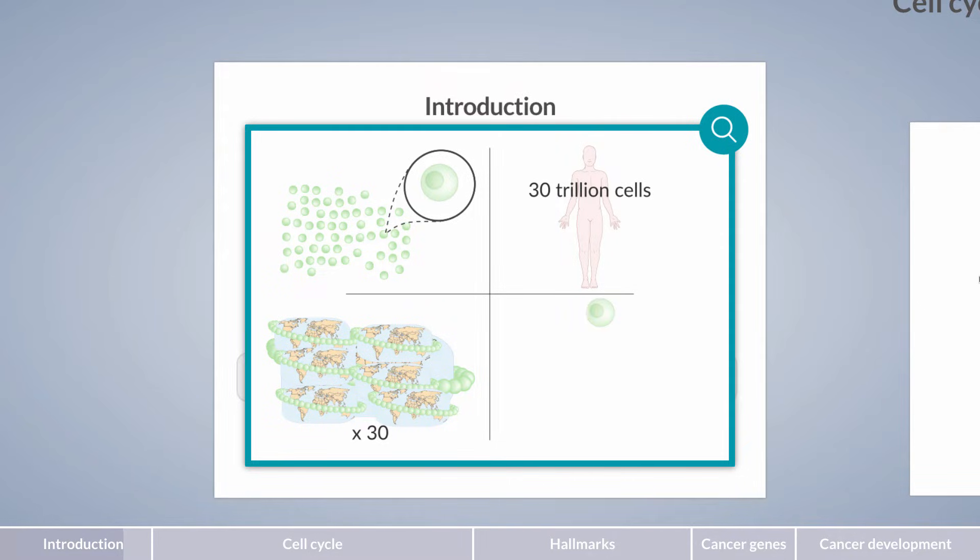All of these cells are derived from preexisting cells by division, which is tightly regulated by the cell cycle and its control mechanisms. Loss of cell cycle control leads to uninhibited cell division and cancer development.